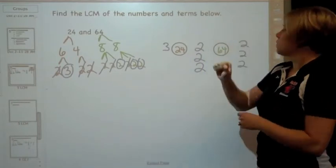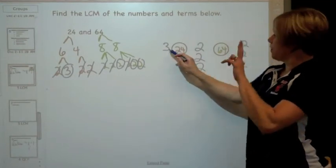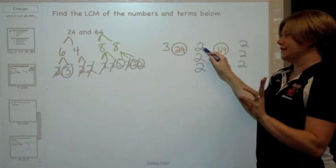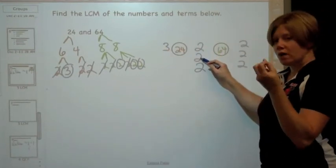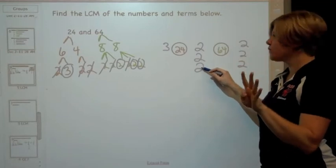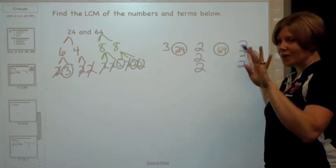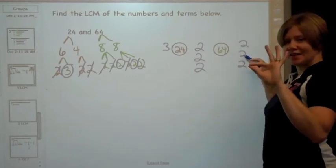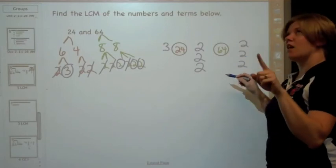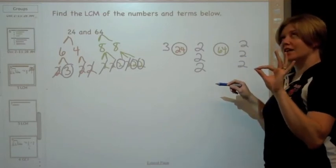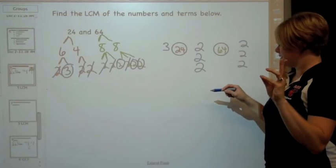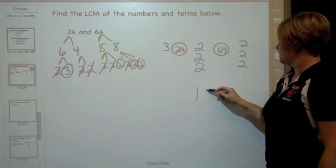For the LCM, you have to multiply all of the factors. So, I have 3 times 2 is 6, times 2 is 12, times 2 is 24, times 2 is 48, times 2 is 96, times 2 is 192.